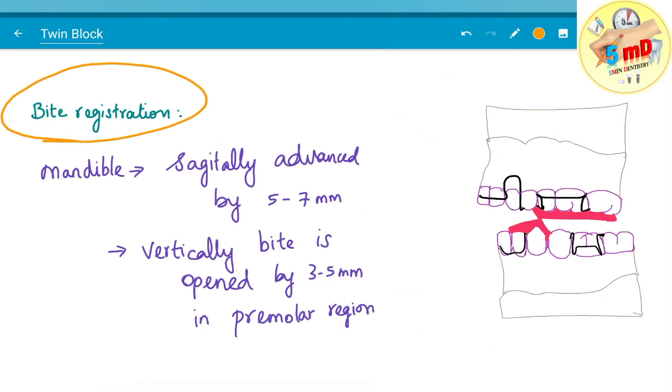The bite registration before fabrication is made by the following process. The mandible is sagittally advanced by 5 to 7 mm. The mandible is brought forward and vertical bite is opened by 3 to 5 mm in the premolar region.